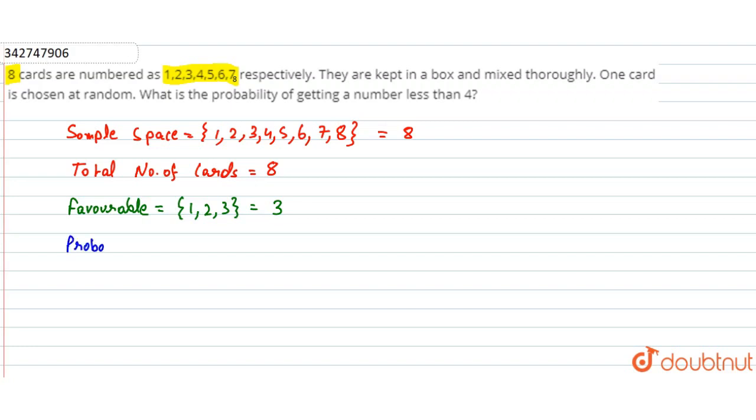Probability is equal to favorable outcome divided by total outcome.